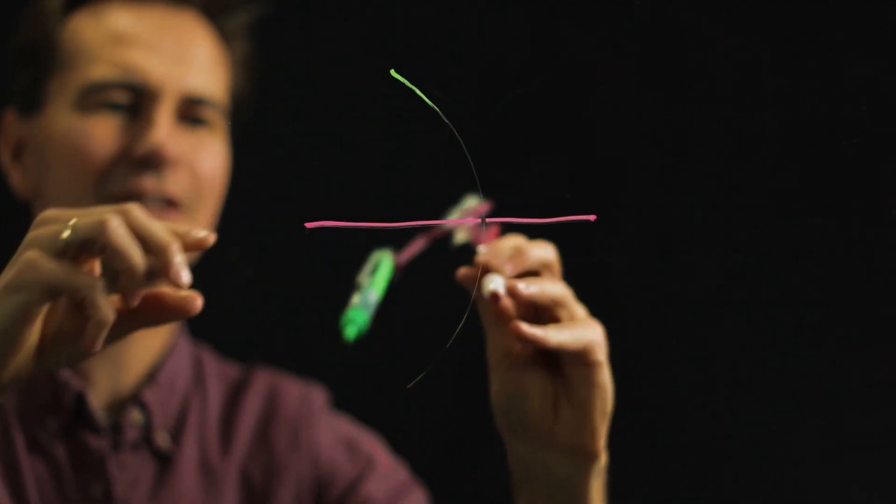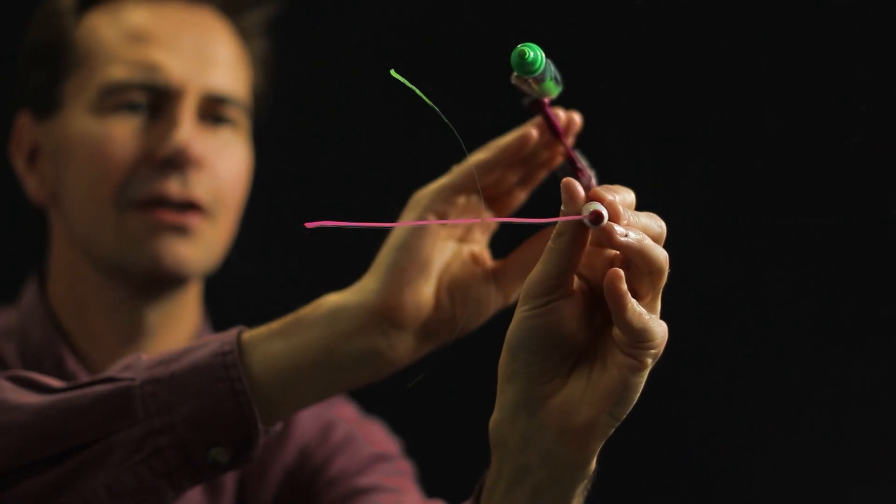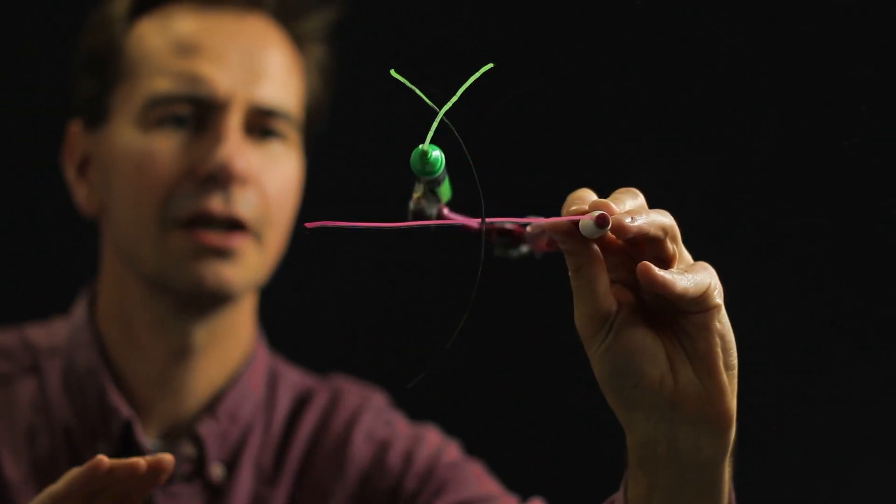And then you do the exact same thing on the other side. Stick the end there, and you draw a half circle like that.